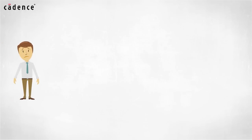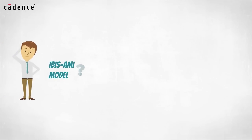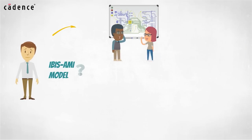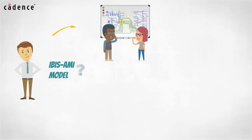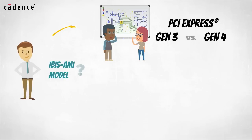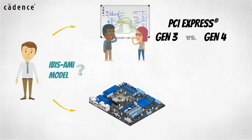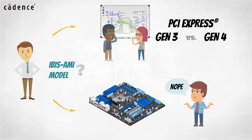However, depending on where you are in the design cycle, you may not have an IBIS AMI model that allows you to simulate your transceiver. For instance, you may be early in the design cycle and trying to choose between industry standards such as PCI Express Gen 3 versus Gen 4. Or you may be late in the design cycle and find out your chosen series vendor cannot provide a usable IBIS AMI model for their device.